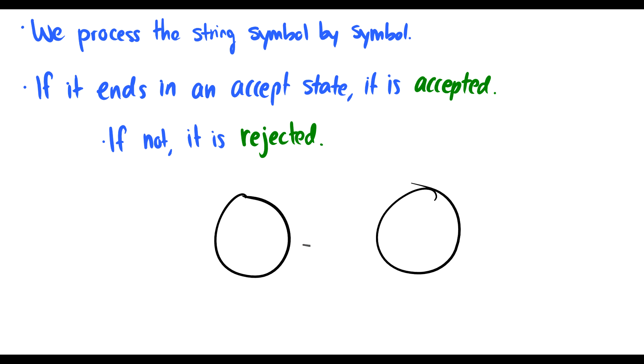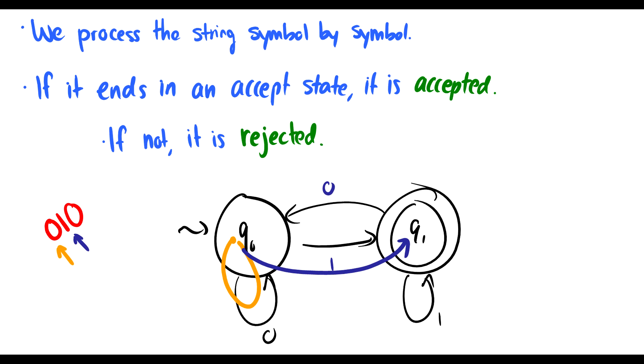For instance, if I have two circles here and it's going to start in Q0 and it's going to end in Q1, and I have the string 010. First we read the zero, we start here, we do a loop. Then we read the one. It takes us to Q1. And then we read the zero and it takes us back to Q0. So we process this one by one and we end up in a non-accept state. So we reject the string. We say it's bad. Terrible string. It's not in our language.